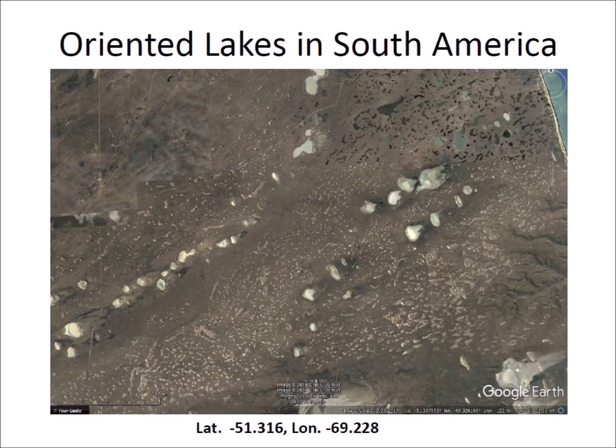I looked for the oriented lakes in Chile mentioned by Kaczorowski but was not able to find them — this is why it is a good idea to always include latitude and longitude for any geologic features. I found some oriented lakes at the tip of South America in Argentina, not far from Tierra del Fuego. If there are any oriented lakes in Chile, they are probably similar to these. The terrain has many thermokarst lakes, like Alaska, that are not elliptical, and the lakes are aligned along river channels that drain into the Atlantic Ocean.